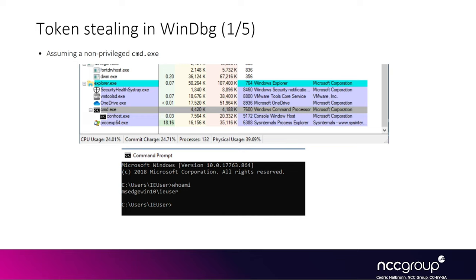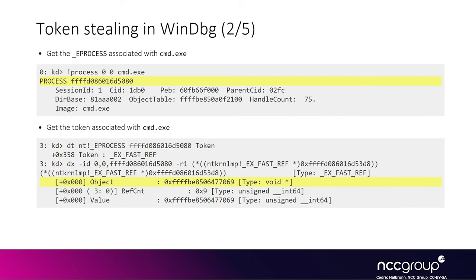If you type whoami, you can see the token associated with this process is from a regular user — in our case, the IE user. If we run our exploit from this command prompt, the goal is to elevate this particular command prompt's privileges to NT AUTHORITY\SYSTEM. So when you type whoami again, you can see you have system privileges. We're going to show how to patch things in the debugger in order to elevate our cmd.exe to SYSTEM.